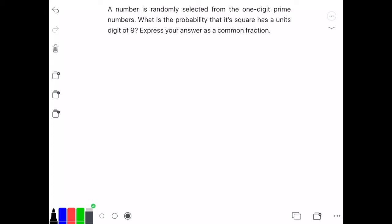The one-digit prime numbers are 2, 3, 5, and 7. Don't forget that 1 is not prime. We have a total outcome of 4, so we'll write 4 in the denominator.